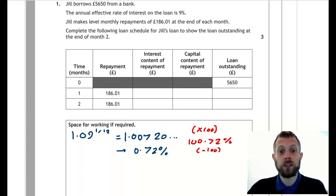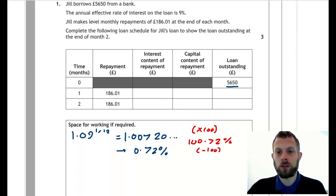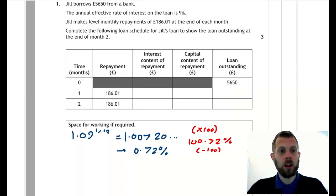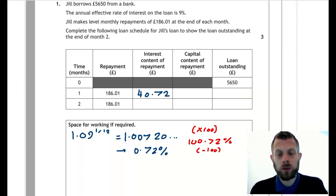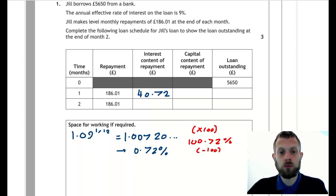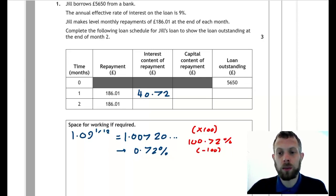So the next thing is that we take 0.72% of £5,550, and that will be the interest that is due to be paid after the first month. If you use the unrounded answer of 0.0072... multiplied by the loan amount, you will get £40.72. If you round your answer here, then the answer will differ slightly by a few pence, which may not be important for the marks.